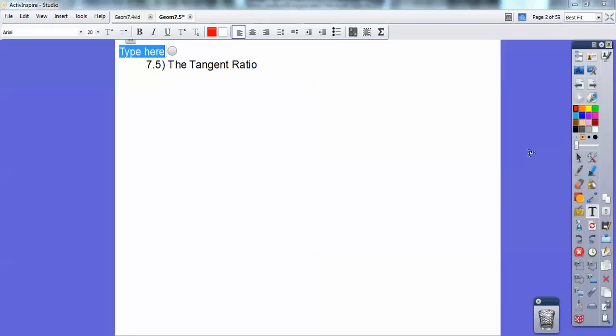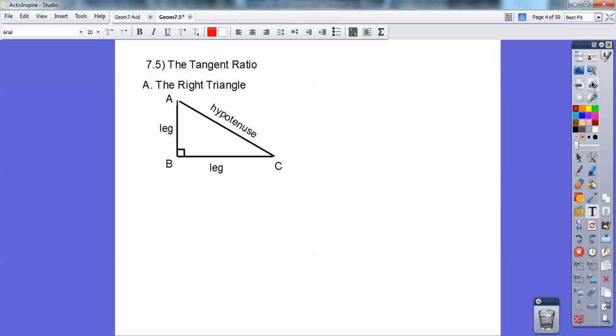Welcome to the tangent ratio. Let's begin with the right triangle first. Remember it has two legs and a hypotenuse. The hypotenuse is always opposite that right angle.